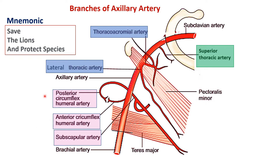You can remember all six branches using the mnemonic 'Save The Lions And Protect Species': S for Superior thoracic, T for Thoracoacromial, L for Lateral thoracic, A for Anterior circumflex humeral, P for Posterior circumflex humeral, and S for Subscapular artery.